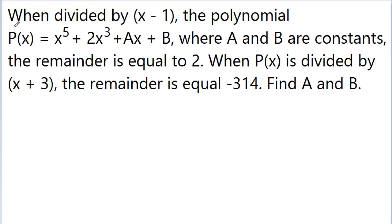In this video, we have a very nice problem. The problem is: when divided by x minus 1, the polynomial p(x) = x to the power 5 plus 2x cubed plus ax plus b, where a and b are constants, the remainder is equal to 2. When p(x) is divided by x plus 3, the remainder is equal to minus 314, and we have to find the value of a and b.